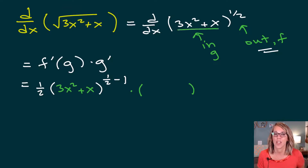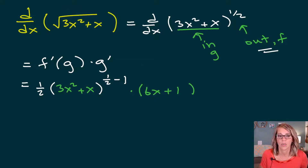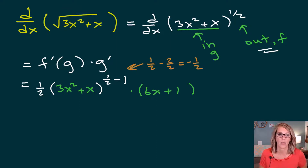The derivative of 3x squared plus x is — bring the two out in front — three times two, that's 6x plus one. So let's clean up what we can. I can rewrite that power: one-half minus two over two, and we saw that to be a negative one-half power.